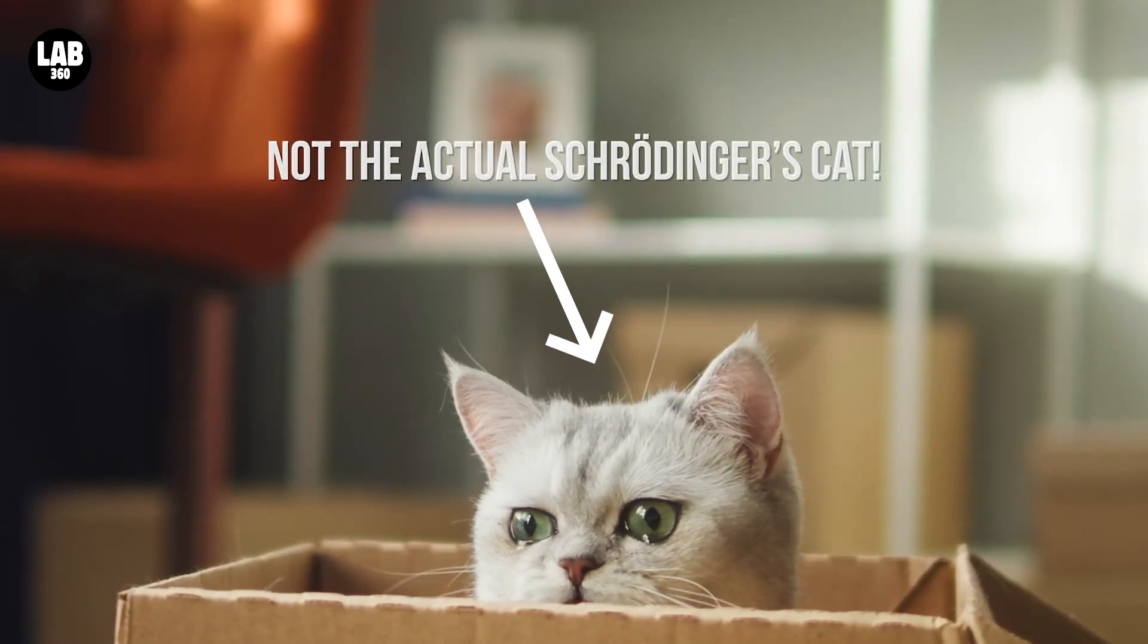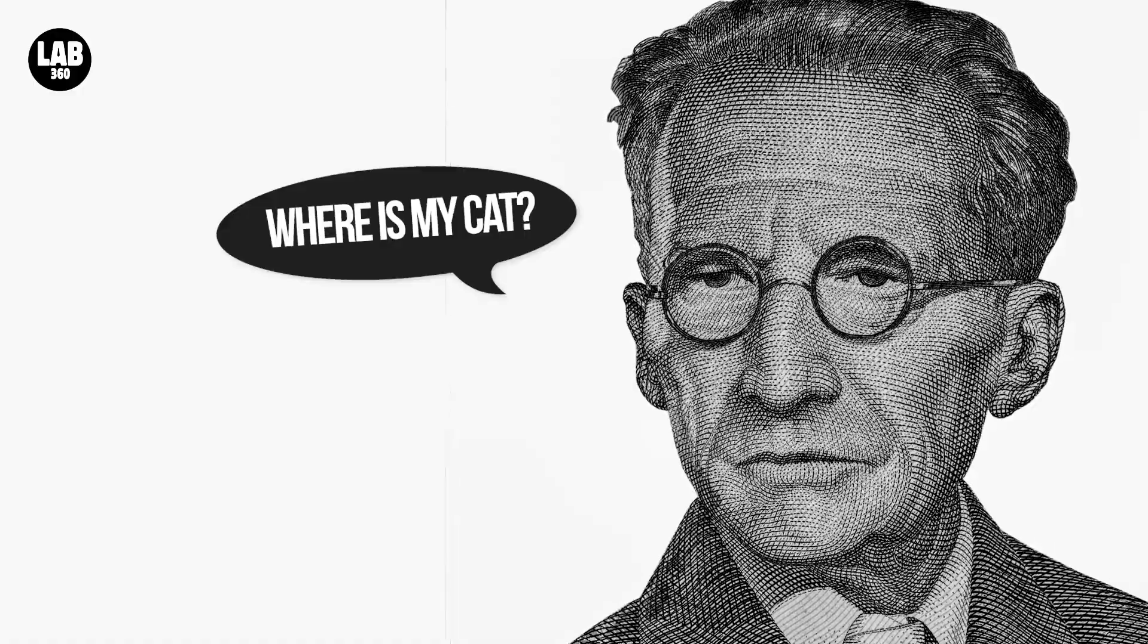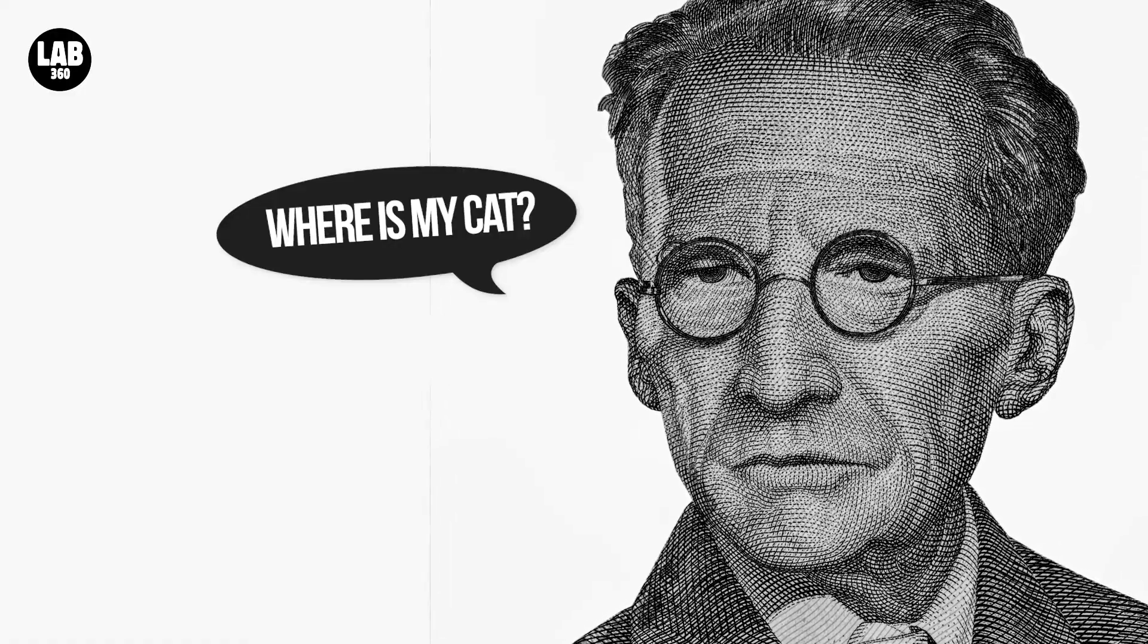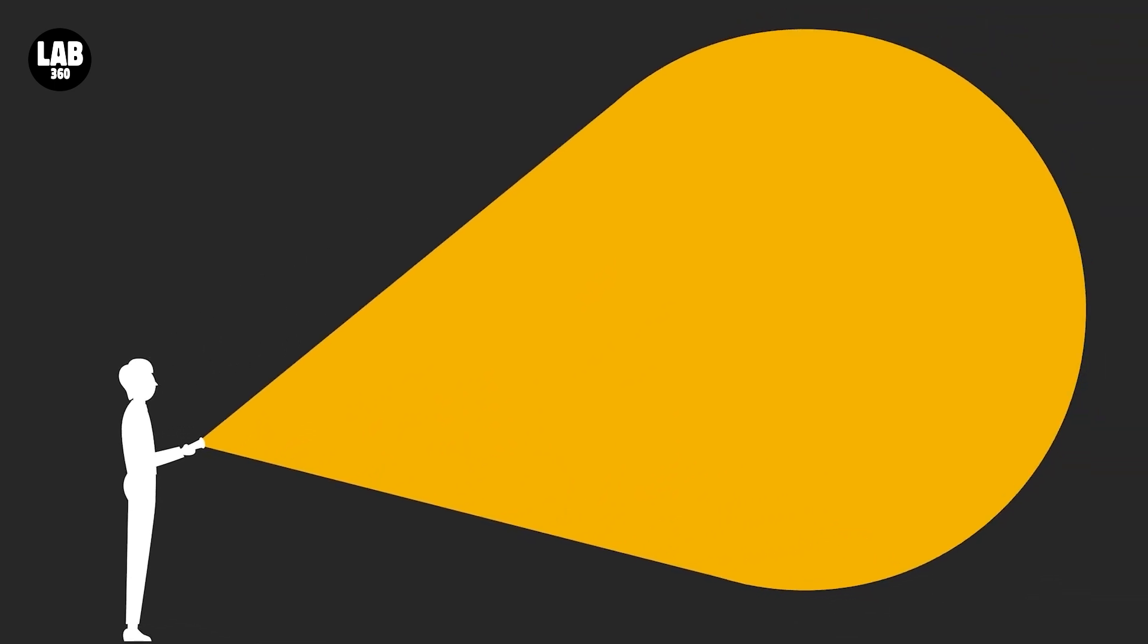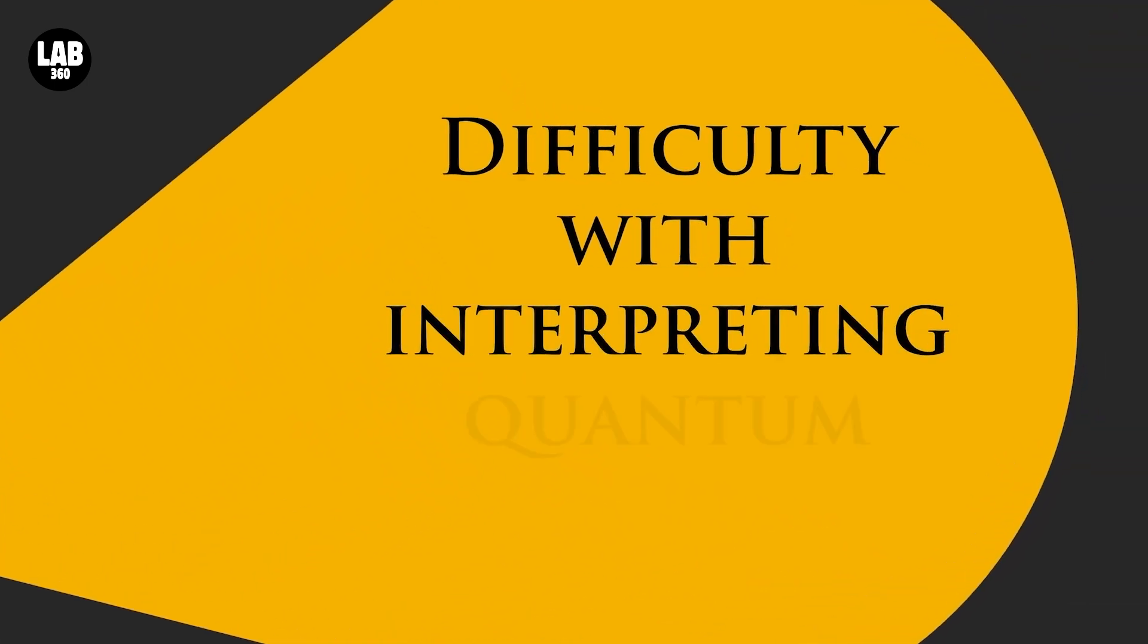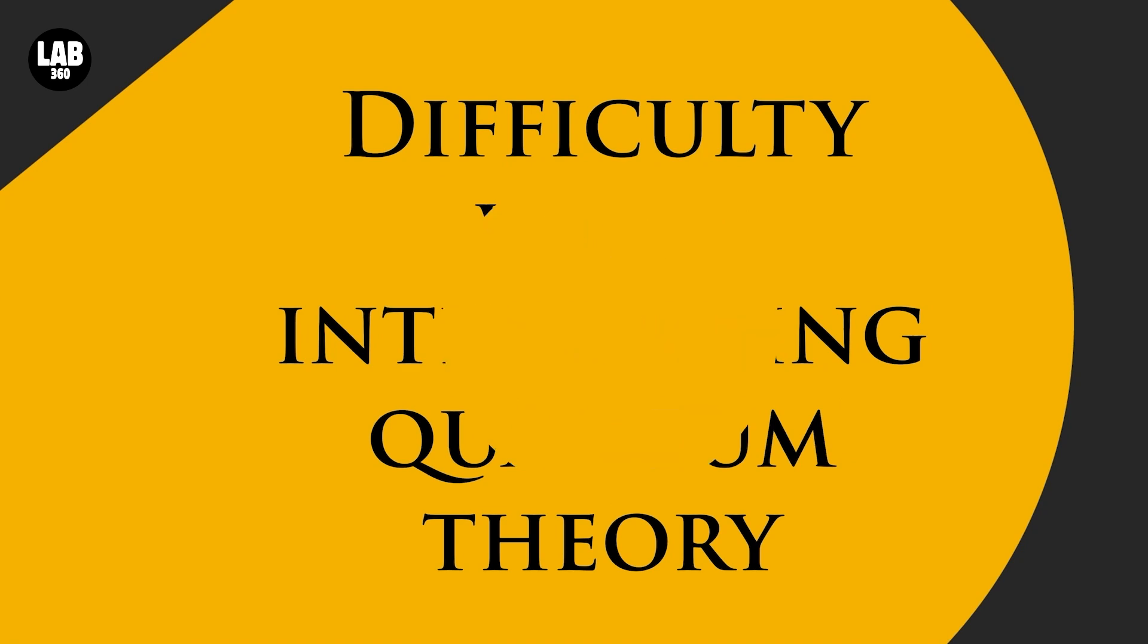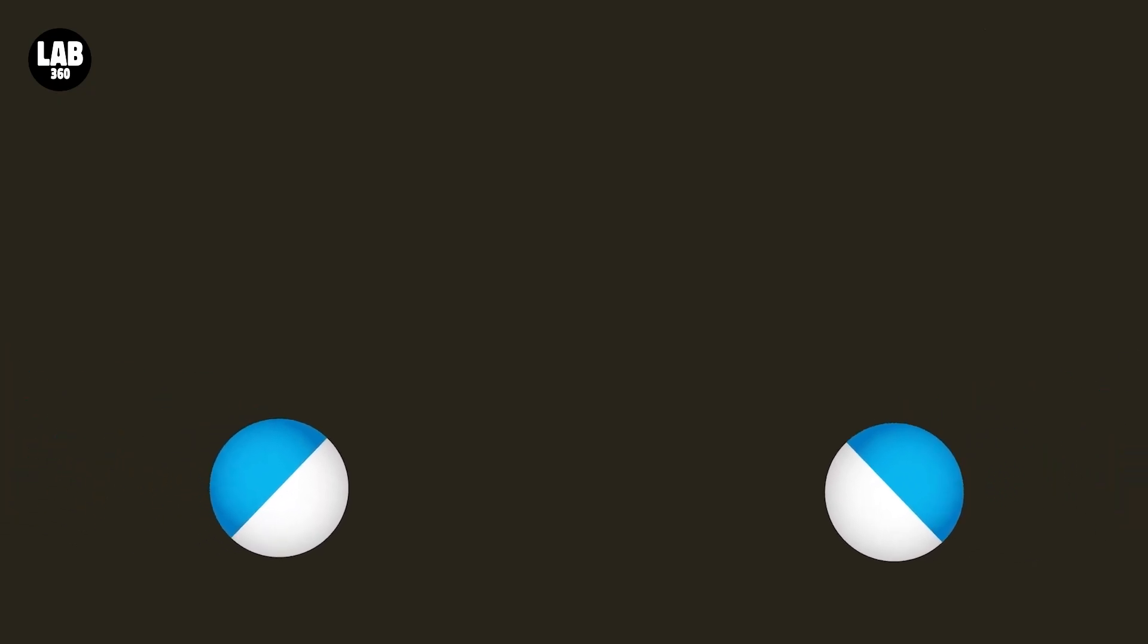You might have heard of Schrödinger's cat. Devised in 1935 by the famous Austrian physicist Erwin Schrödinger, this thought experiment was designed to shine a spotlight on the difficulty with interpreting quantum theory, which states that any object like an atom or a particle that adheres to quantum rules exists in multiple states until they are observed.